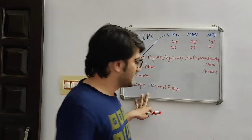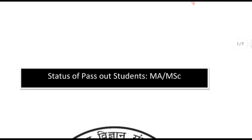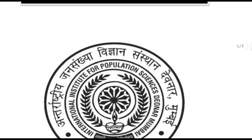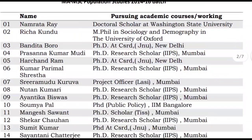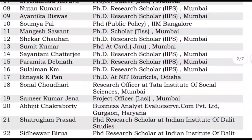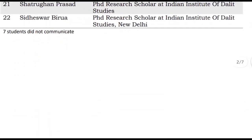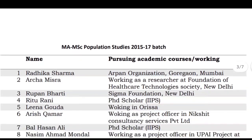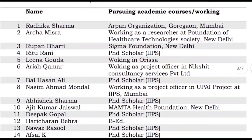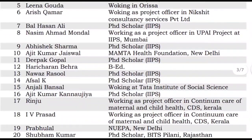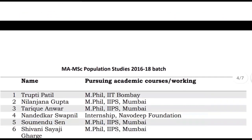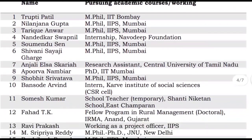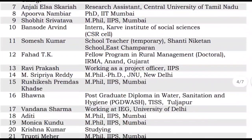If we talk about scope and alumni, they have shared statistics about some batches and where they are right now. Most of the students can be seen getting into academic fields. A few are pursuing PhDs at IIPS itself, some are pursuing PhDs at other colleges like JNU, and one has even gone to Washington State University. So there is a lot of academic diversity. If you want to go into the academic or research field, this college looks really beneficial for those purposes.